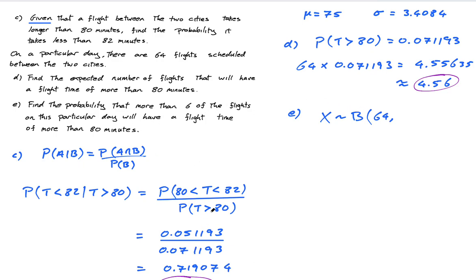So there's 64 and the probability that they're more than 80 is 0.071193. We just need to find the probability that X is more than six flights on this particular day.